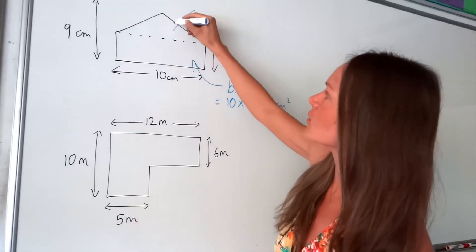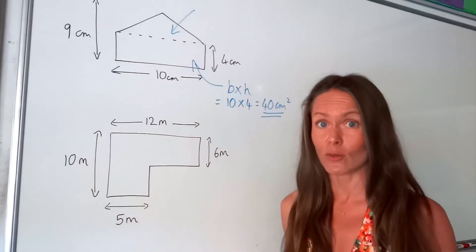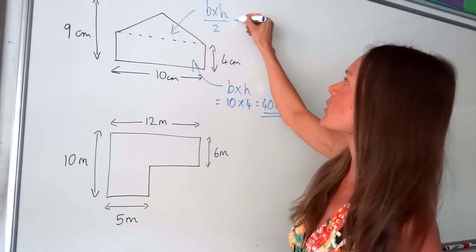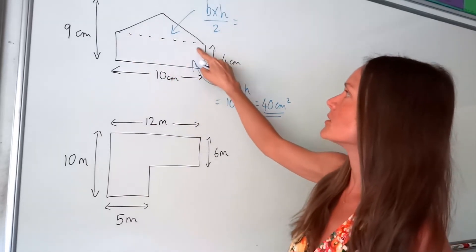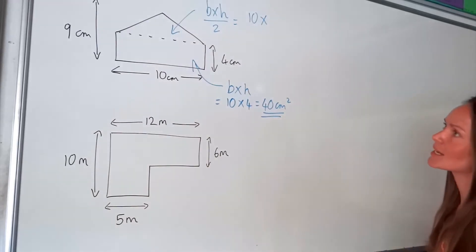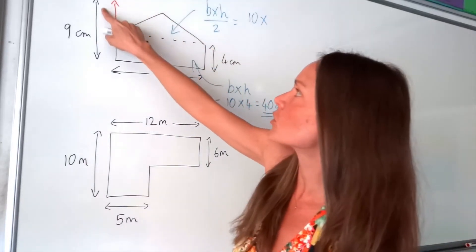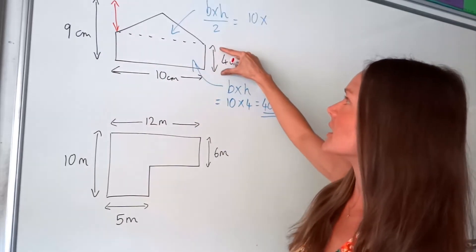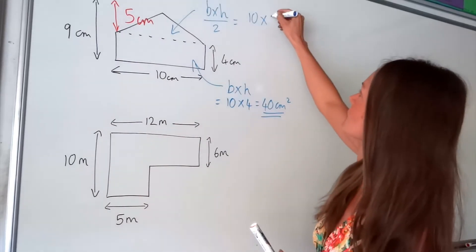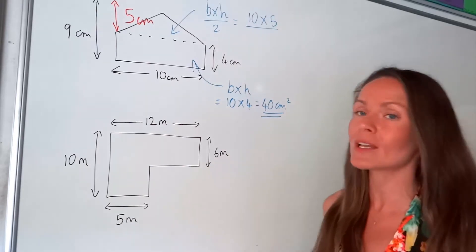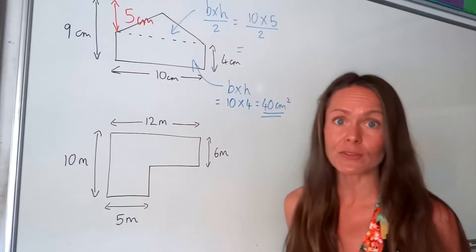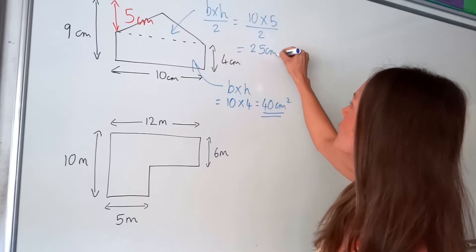So here we've got a triangle. The formula to work out the area of a triangle is a little bit different — we have to do base times height divided by 2. So the base of this triangle is also 10. Now the height of this triangle — well, we haven't actually been given the height. We have to calculate it. Because we know the total height is 9 and this height here is 4, the height of the triangle must be 5 centimetres. So 10 multiplied by 5 is 50, and 50 divided by 2 is 25. So there's the area of the triangle.